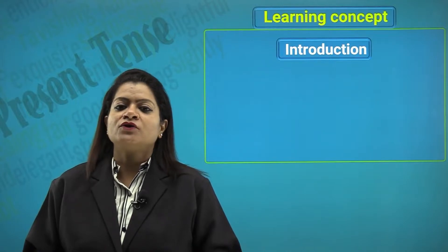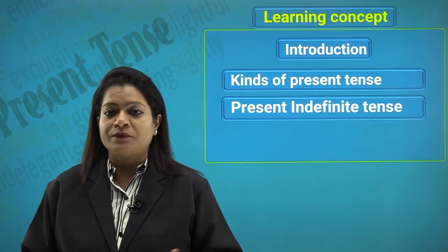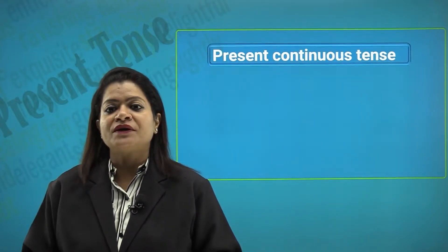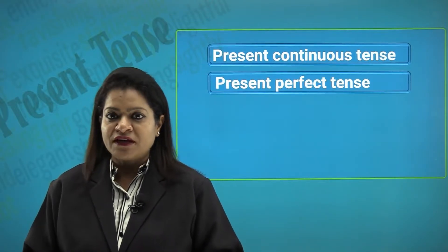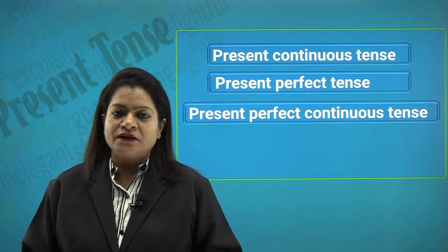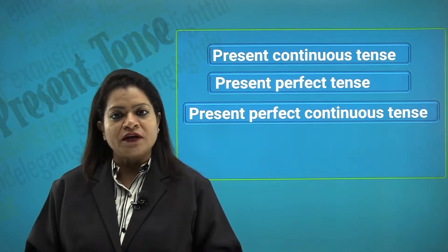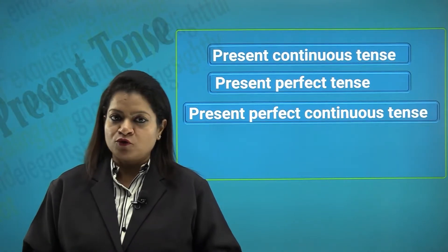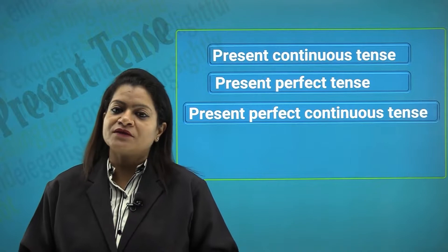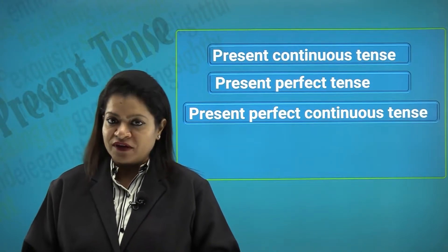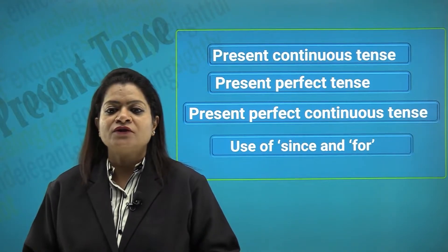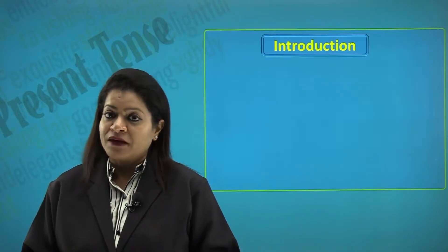So what are we going to learn today? We're going to learn about the kinds of present tense. We're going to learn about the present indefinite tense, which is simple present tense. We will also talk about the present continuous tense, present perfect tense, and present perfect continuous tense. So remember, in the topic of present tense, we're going to talk about four types: simple present (also called present indefinite), present continuous (also called present progressive), present perfect, and present perfect continuous. We will also look at the use of the words 'since' and 'for'.